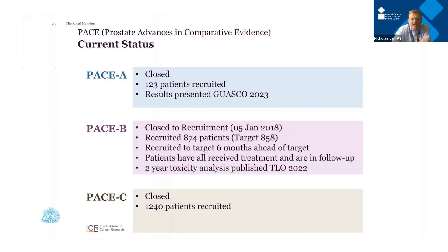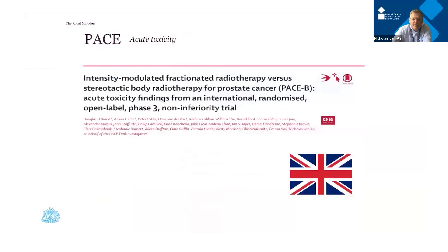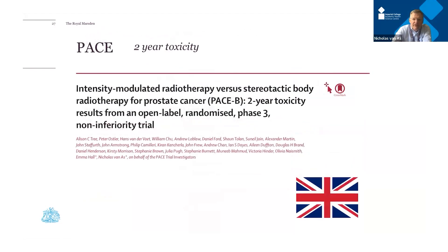The surgical randomization — PACE-A — has completed recruitment with 123 patients. Results were presented as the plenary session at GU-ASCO this year and the paper is being drafted. PACE-B, comparing standard fractionated radiotherapy with five fractions, has also completed accrual. We've presented the two-year and late toxicity results, and the acute results from the first three months. The late toxicity paper has been published in The Lancet Oncology. PACE-C has closed but no analysis has been done yet.